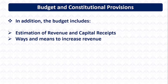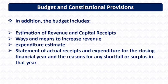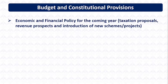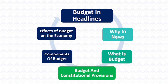In addition, the budget includes estimation of revenues and capital receipts, ways and means to increase revenues, expenditure estimates, statements of financial receipts and expenditure for the closing financial year, and reasons for any shortfall or surplus in that particular year. Economic and financial policy for the coming year, such as taxation proposals, revenue prospects, and introduction of new schemes and projects, also comes under this.